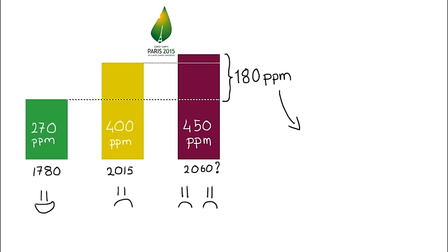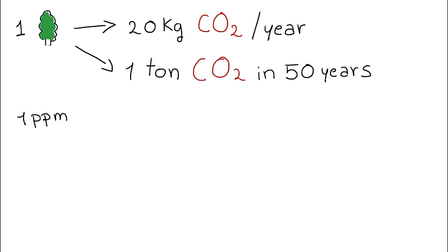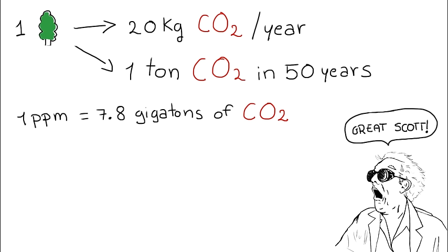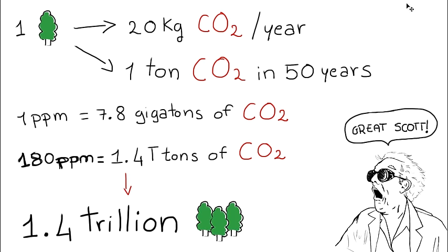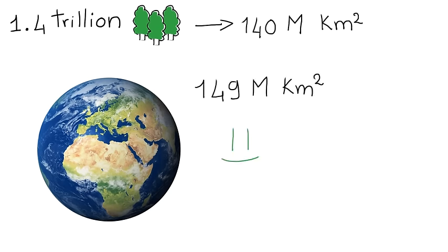So there is still 180 parts too much. Can trees help there? As we saw, one tree can offset 20 kilograms of CO2 per year, but that also means that it can suck one ton in 50 years. One part per million in the atmosphere is equivalent to 7.8 gigatons of carbon, which is a lot. Since we need to offset 180, we need to suck 1.4 trillion tons of carbon dioxide. But we have seen this number before. That's 1.4 trillion trees! And they require 140 million square kilometers of land, which is less than what's available on planet Earth. So we're good!